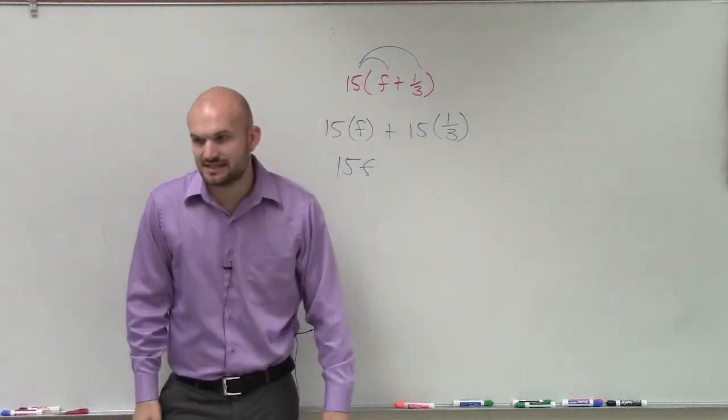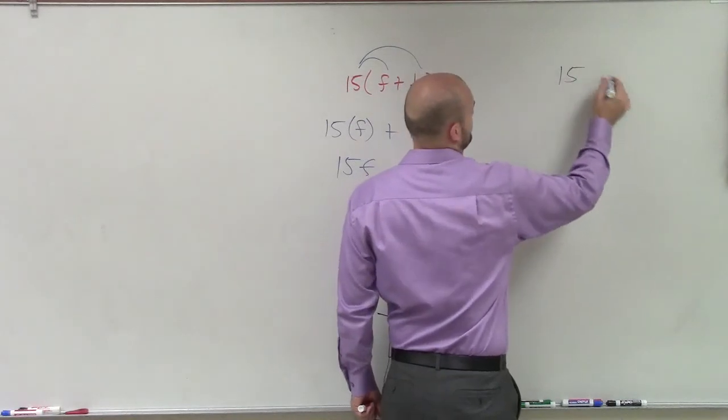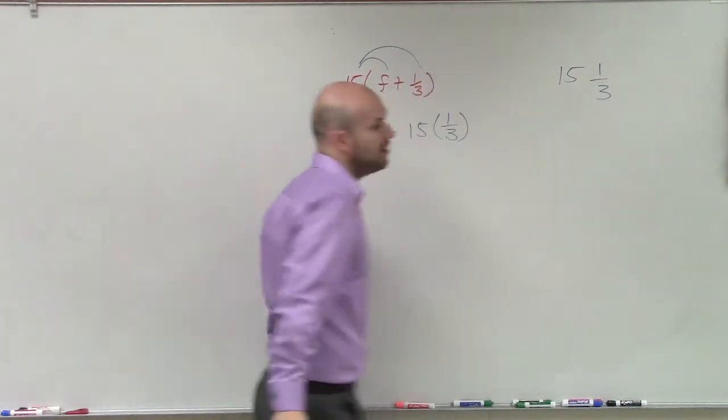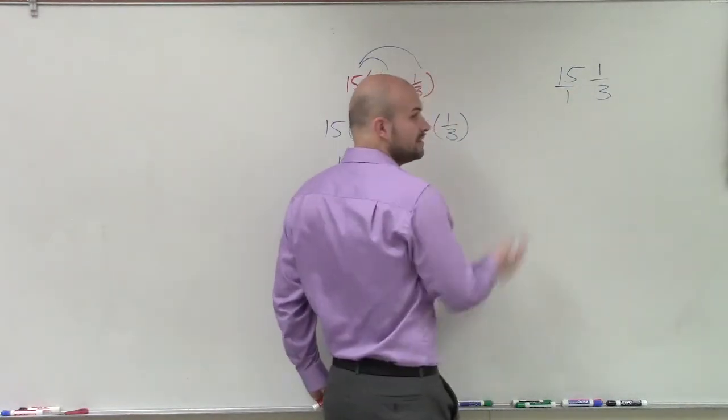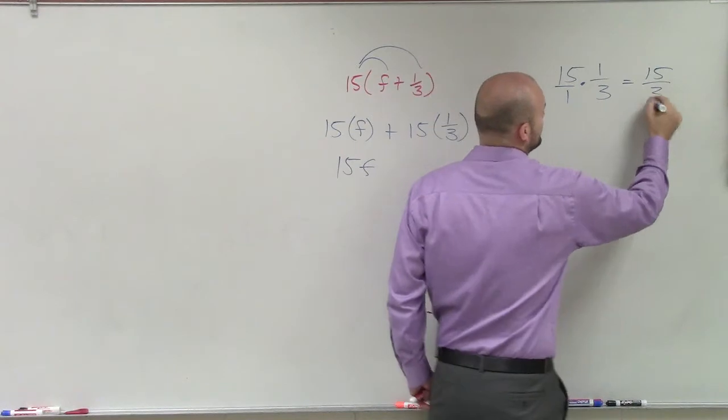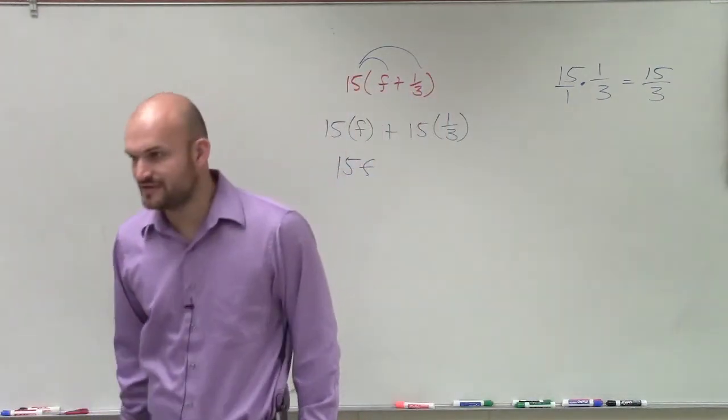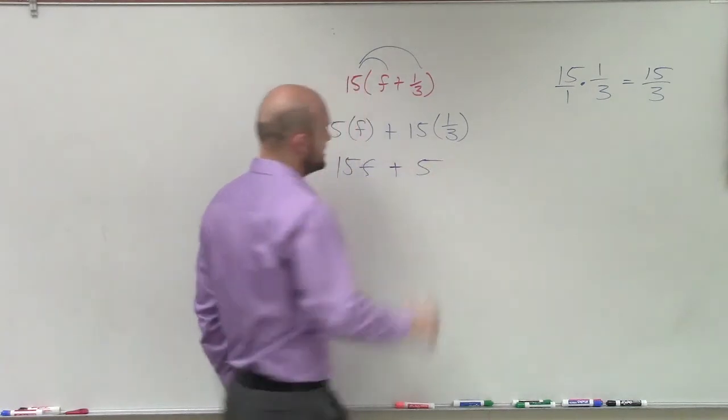And now I just need to do 15 times 1/3. So there's a couple ways we could do this. To multiply a whole number by a fraction, we can convert this over to a fraction and then multiply cross, which would be 15 over 3. Now does 3 divide into 15? How many times? Five times. There you go. Your answer's 5.